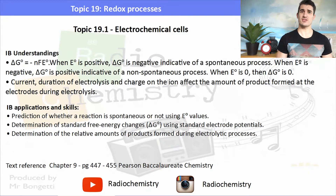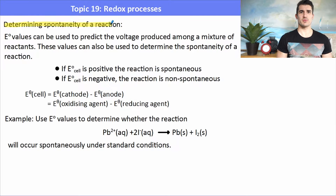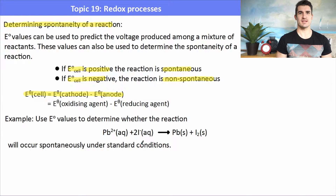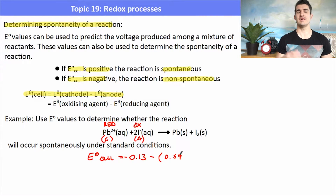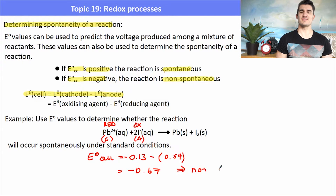We look at how we can calculate the amount of products formed during electrolysis. To determine the spontaneity of a reaction we use the E° values: if the E° cell is positive, that is a spontaneous reaction; if it is negative, that is a non-spontaneous reaction. Remember E° is the cathode minus the anode. In an example using E° values, the lead is undergoing reduction at the cathode and iodide is undergoing oxidation at the anode. From the electrochemical series, E° cell = −0.13 − 0.54 = −0.67, which is negative, representing a non-spontaneous reaction.